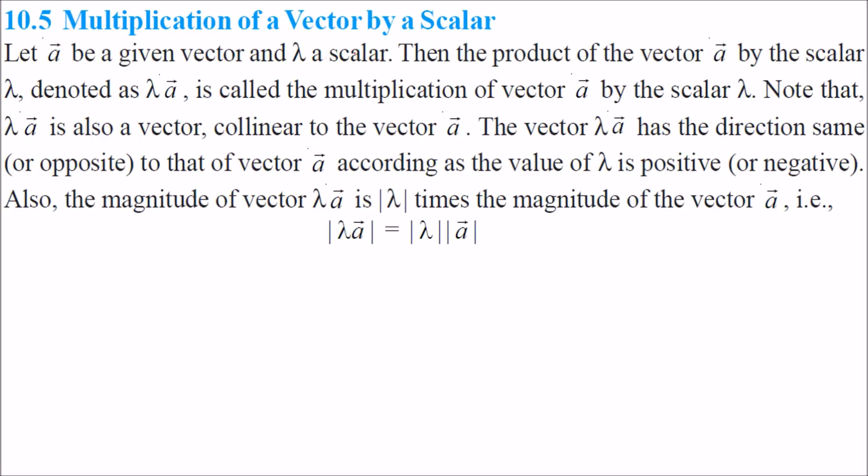Multiplication of a vector by a scalar: Let us take vector a to be a given vector and λ a scalar—any value with no direction, just like any number like 2, 3, -3, -6, or ½. The product of the vector a by the scalar λ, denoted by λa, is called the multiplication of vector a by the scalar.